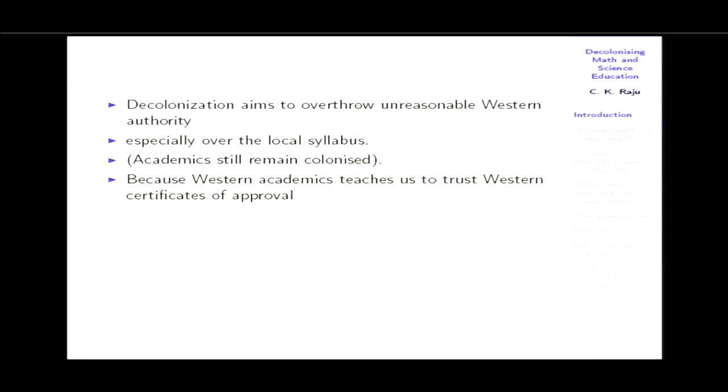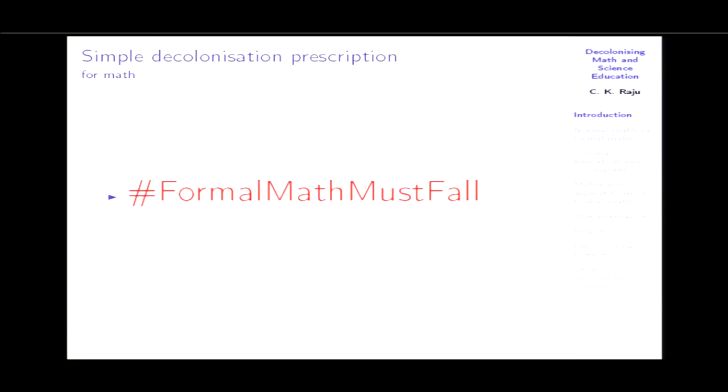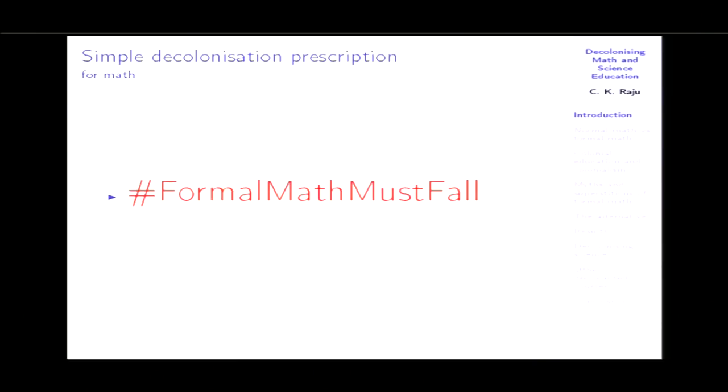Academics are driven to seek Western approval: a degree from Harvard or Cambridge, publications in high-impact journals controlled by the West. This becomes very problematic, for example, in Islamic countries. So the decolonization thesis is: formal math must fall. The critical difference between normal math and formal math is that normal math accepts the empirical — in proofs, definitions, and various things — whereas formal math prohibits it.